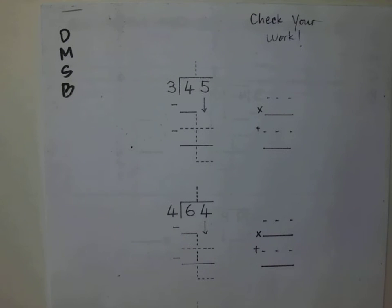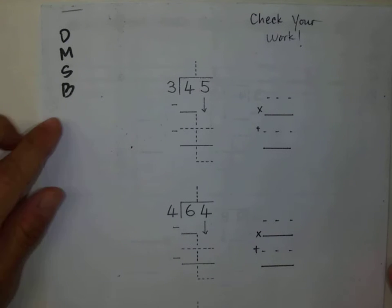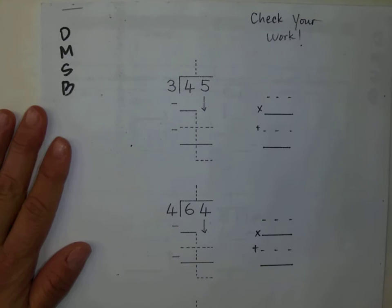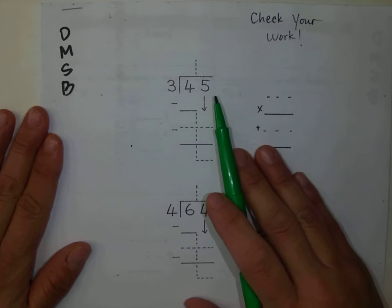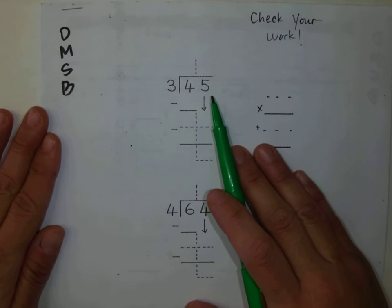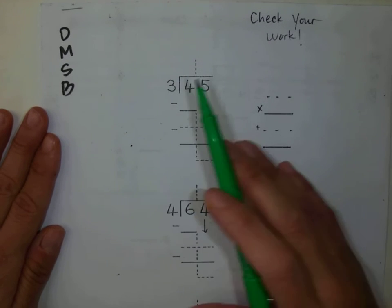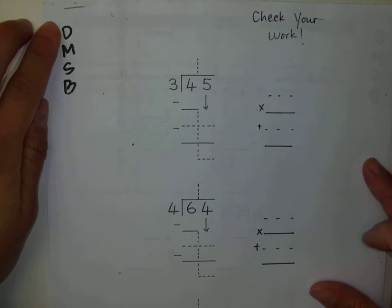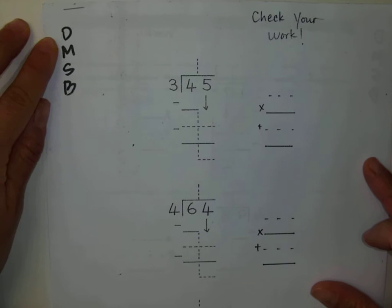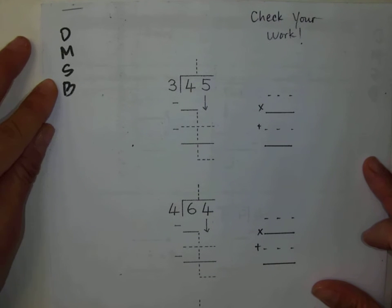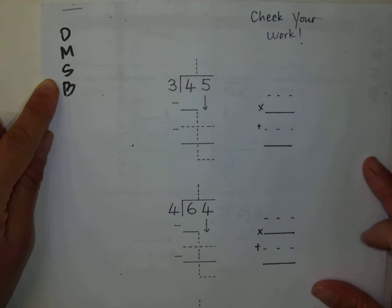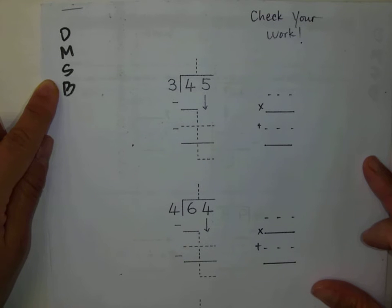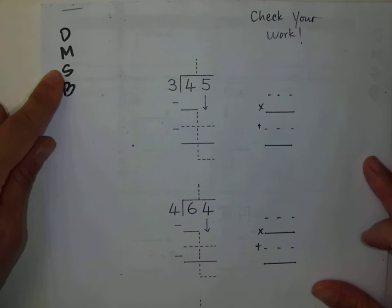I'm going to start off with the first problem. The first problem is 45 divided by 3. On the top left, you see DMSB. Please make sure to also look at the poster that we have in the classroom to refresh your memory about what these steps are.